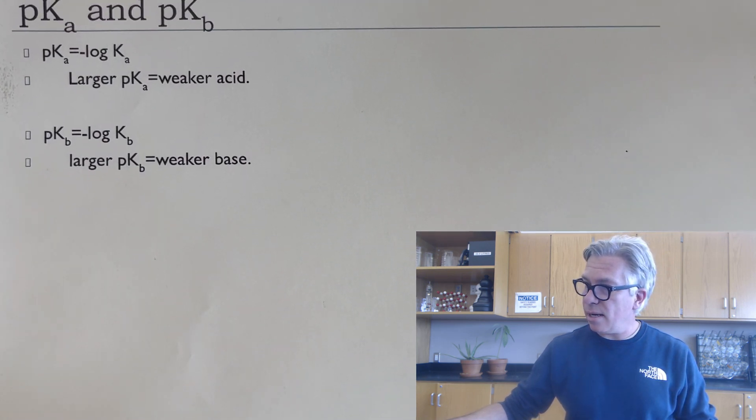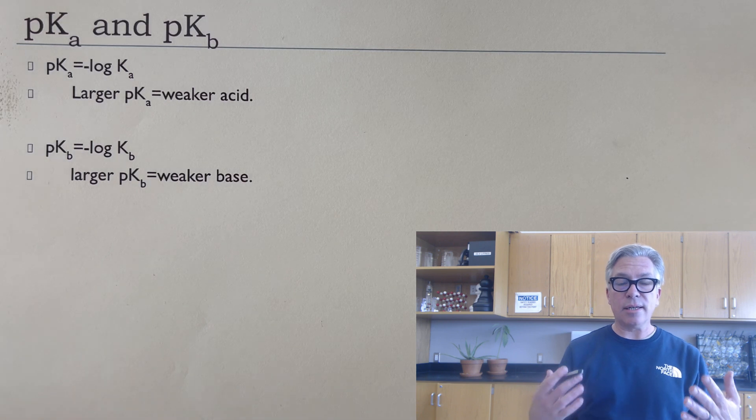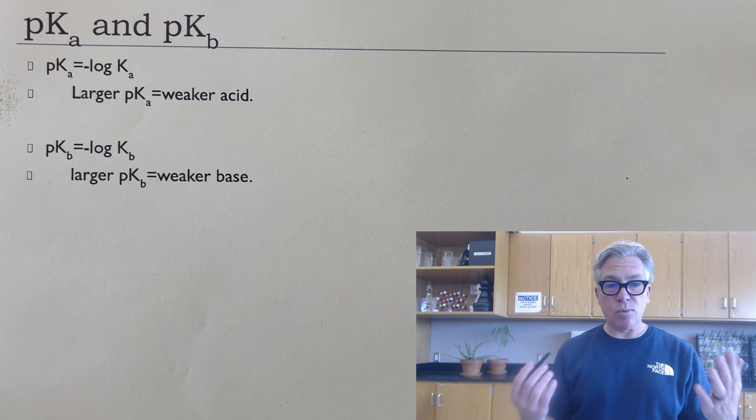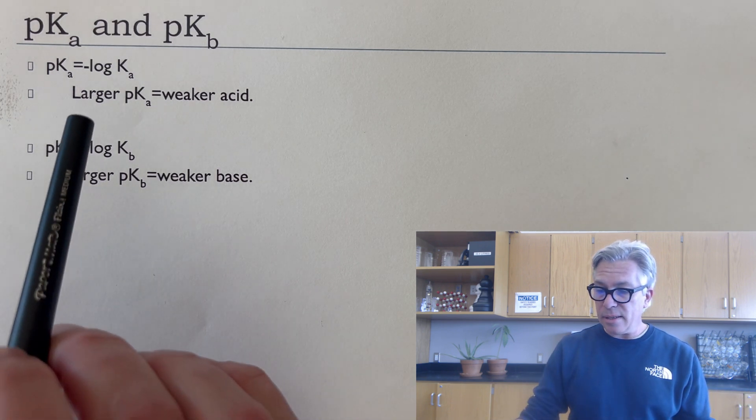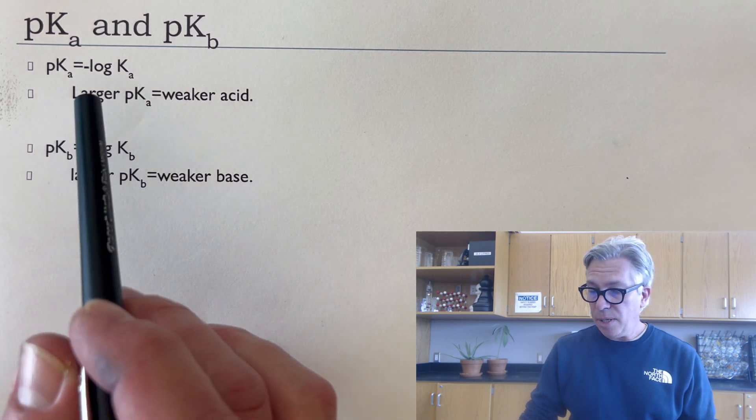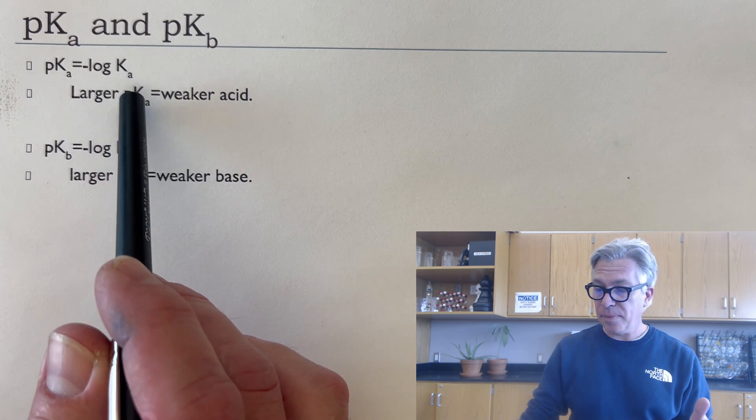First, a quick little detour to talk about pKa and pKb because some of the charts I'm using in this video list acids by their pKa and bases by their pKb. So what is pKa? pKa, in the same way as pH is the negative log of the H+ concentration, pKa is the negative log of the Ka value for that acid.